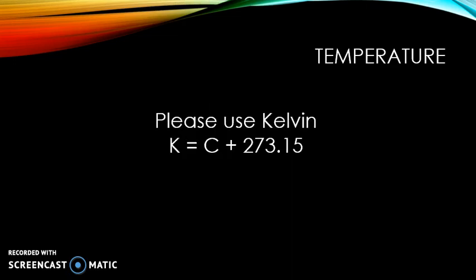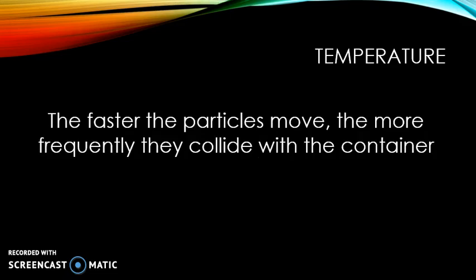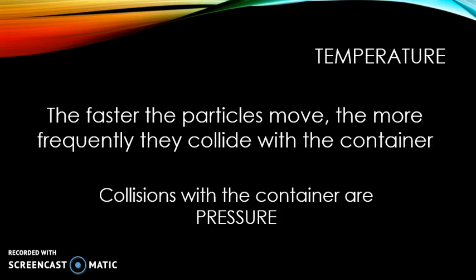In this chapter we tend to use the temperature unit of kelvin. Kelvin equals Celsius plus 273.15. We'll revisit that as we look at interconversions between pressure, volume, and temperature. The faster the particles move, the more frequently they collide with the container — and collisions with the container are how we formally define pressure. So the more collisions, the higher the pressure.